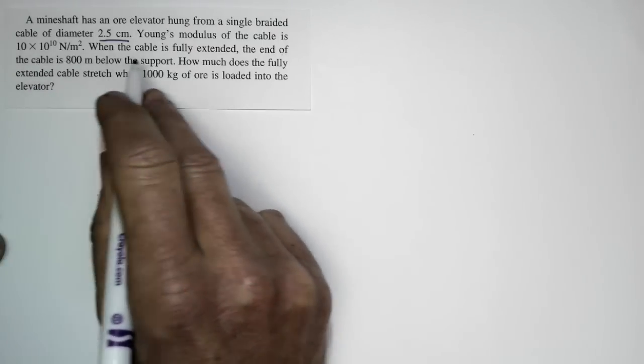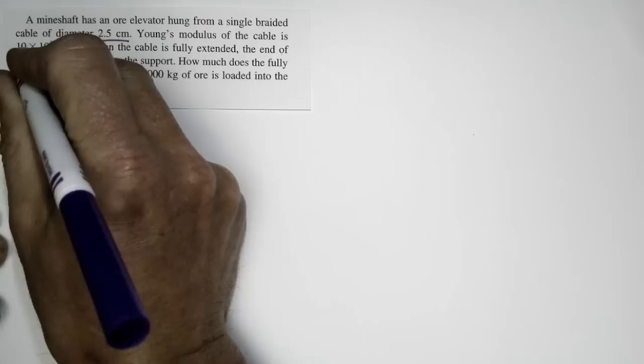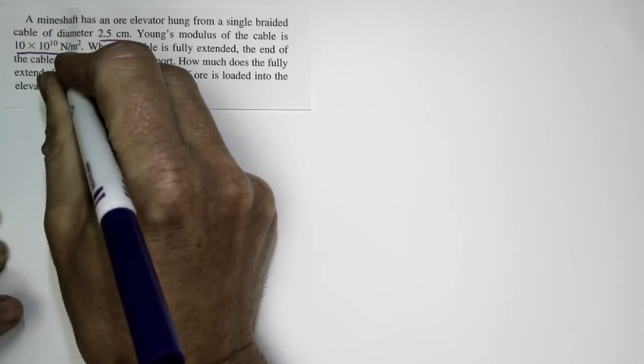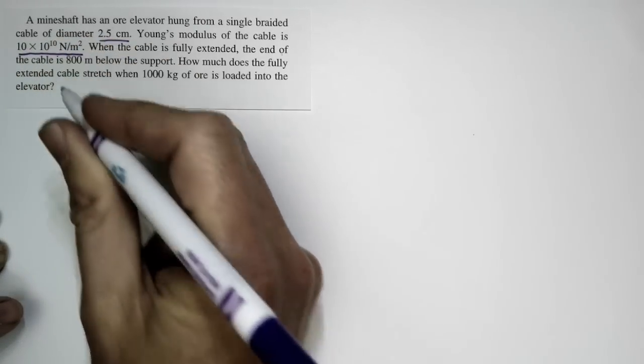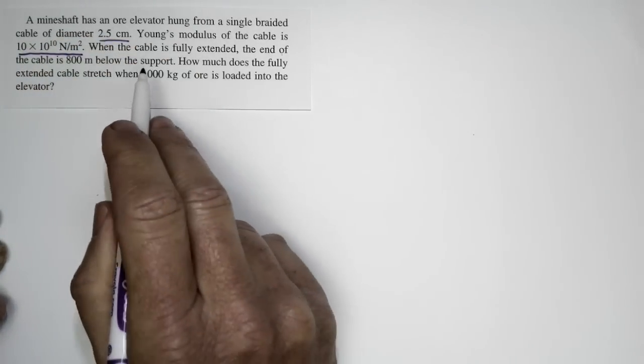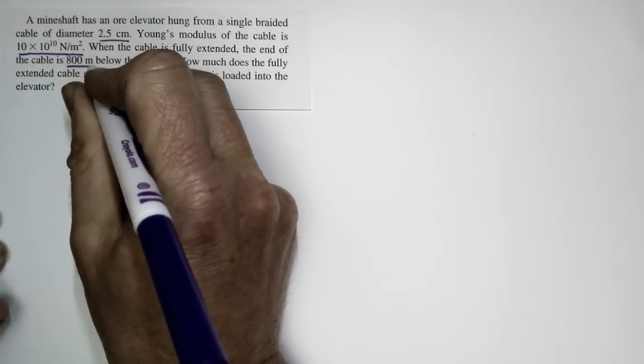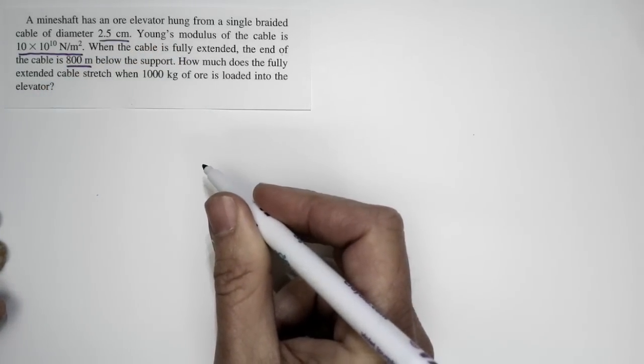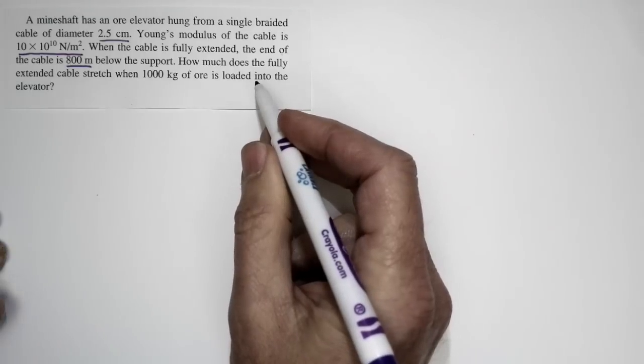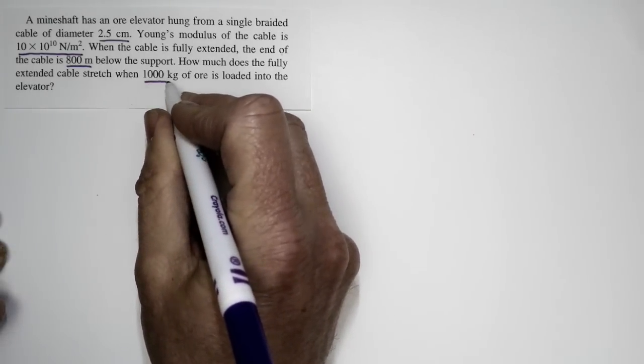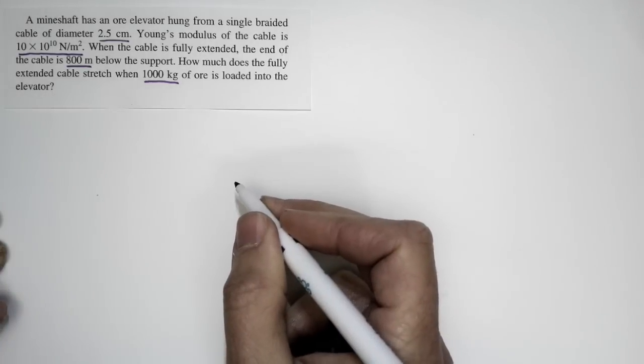The cable is also pretty sturdy. Young's modulus of the cable is 10 times 10 to the 10th newtons per square meter, which is reasonable—it sounds like a steel cable. When the cable is fully extended, the end is 800 meters below the support. How much does the fully extended cable stretch when 1,000 kilograms of ore is loaded into the elevator?